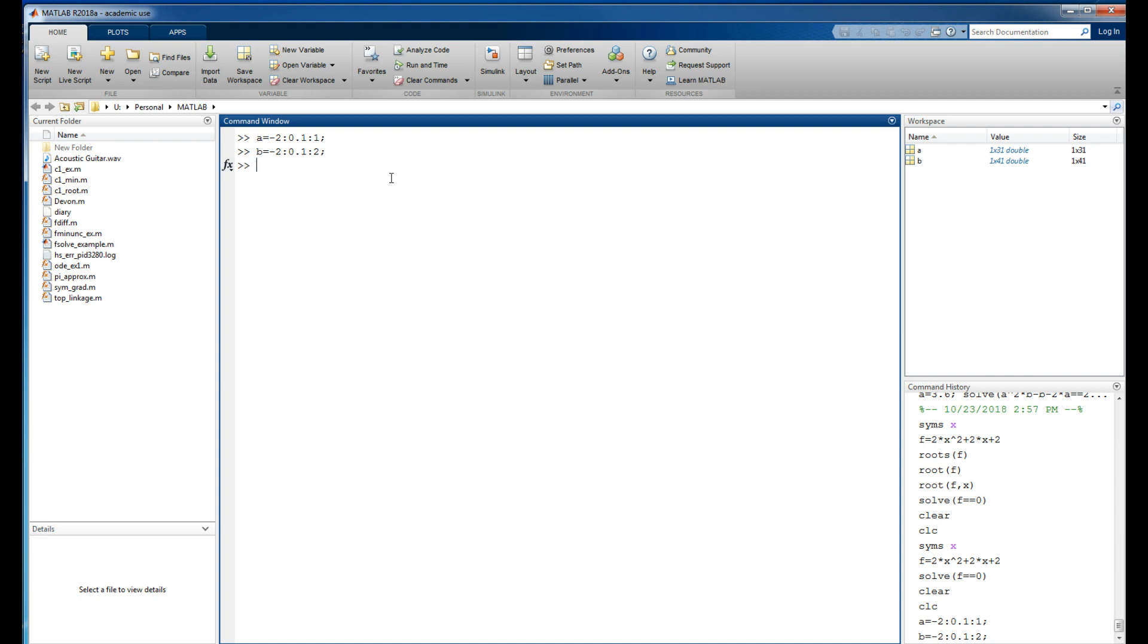Now I need to have a grid of points on the real imaginary plane. I could do a nested loop or something, but there is a command called meshgrid. Give it a and b where a and b are vectors, and it spits out A and B where A and B are matrices. Now I have two matrices, 41 by 31. Why 1 by 31 and not 1 by 30? Well, because I have a zero in there.